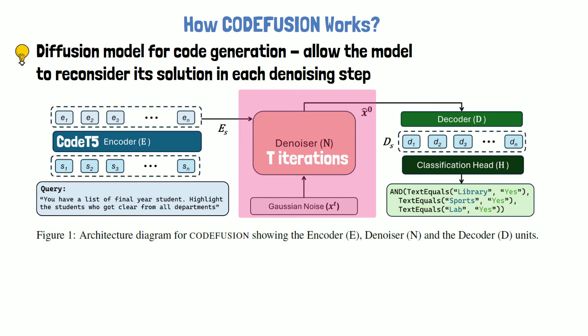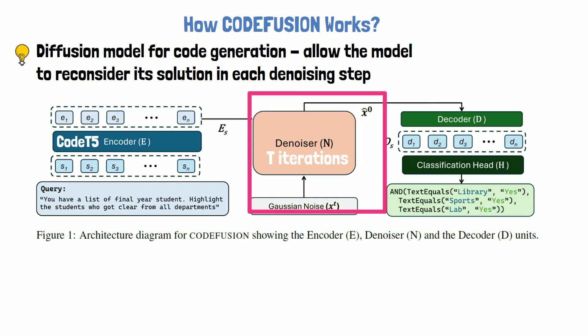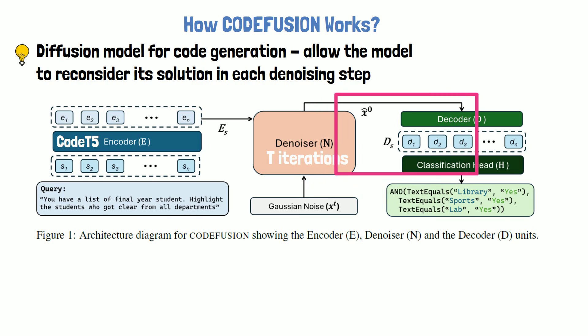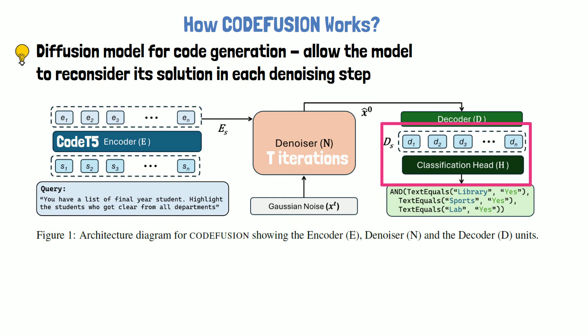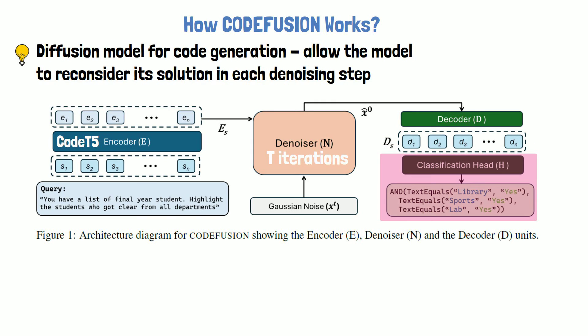Note that the denoising happens in a latent space, and not on code tokens. Finally, after enough iterations, the denoiser ends with X0, which is a representation of the final solution in the latent space. Before projecting the denoised embeddings X0 back to discrete code tokens, X0 is passed together with the prompt embedding E to another transformer-based decoder that creates the final representation for the solution, specified with the letter D, but still not as code tokens. Finally, to generate the code tokens, we pass the representation D via a classification head that yields the most likely code tokens. In this example, we see it yields Excel conditions based on the original prompt.